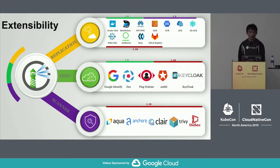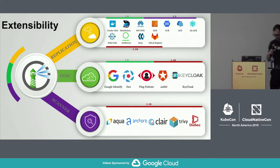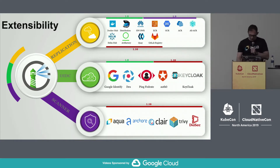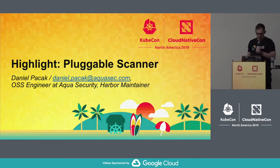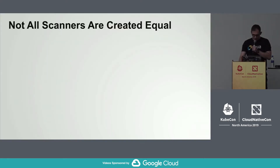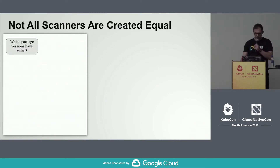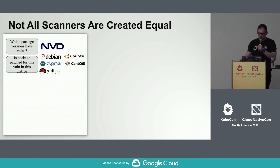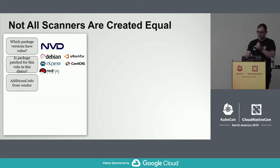I'd like to invite our guest speaker, Harbor maintainer Daniel Pekker from Aqua Security, to talk about this. Thank you, Stephen. I'm working as an open source software engineer at Aqua Security, and I recently became a maintainer. We spent quite some time to make the pluggable scanners available in 1.10. The main takeaway is that image scanning is hard. Even though you can find vulnerability databases, there are lots of Linux distributions, and every day there are new vulnerabilities found. If you add application dependencies vulnerabilities, it gets even harder.